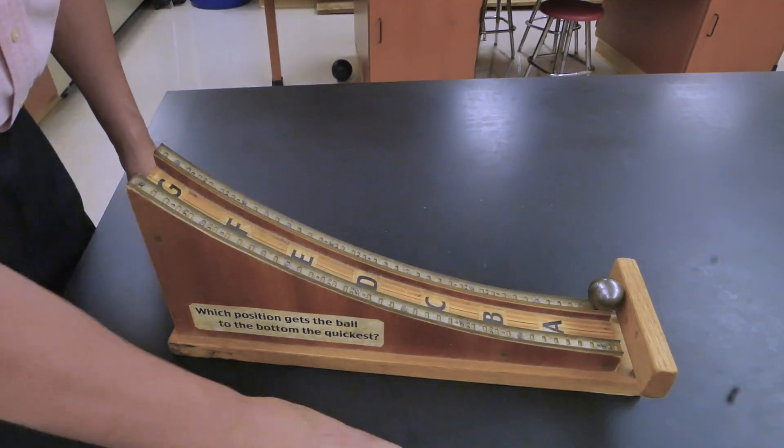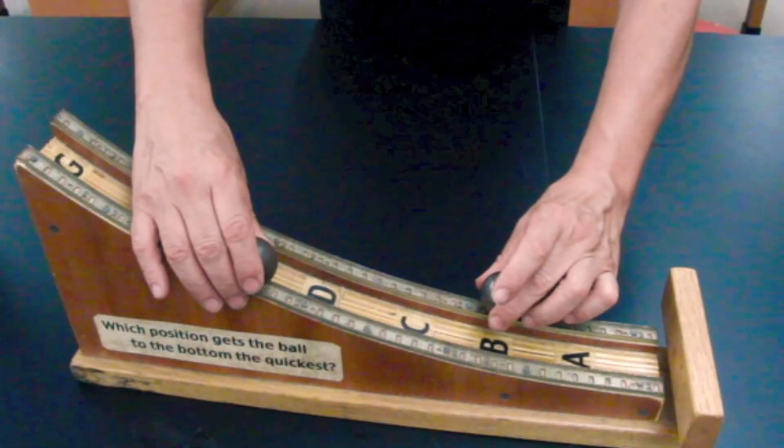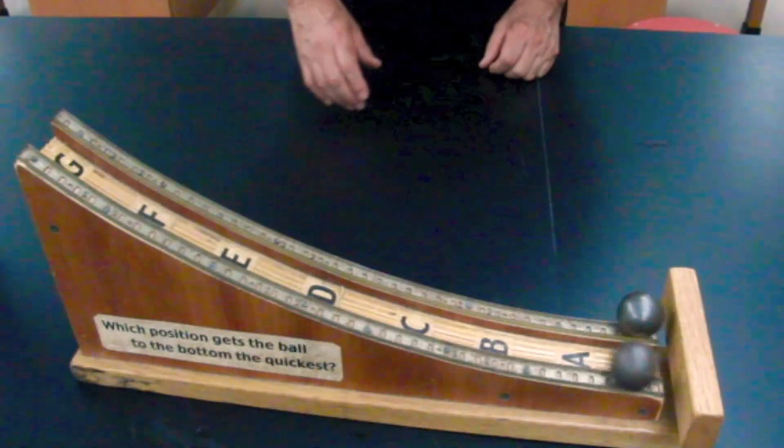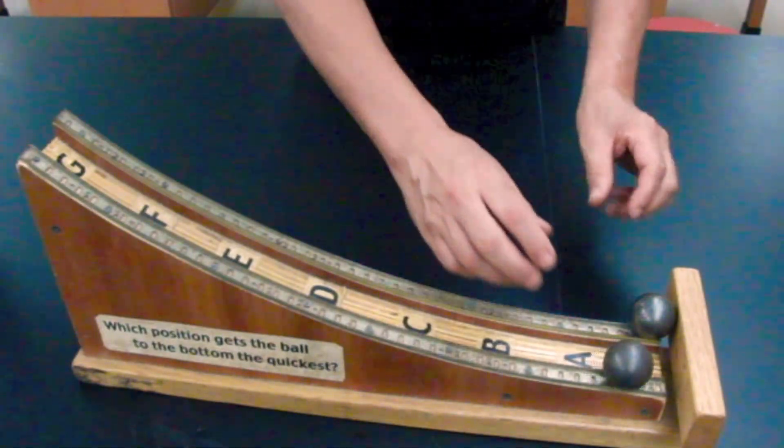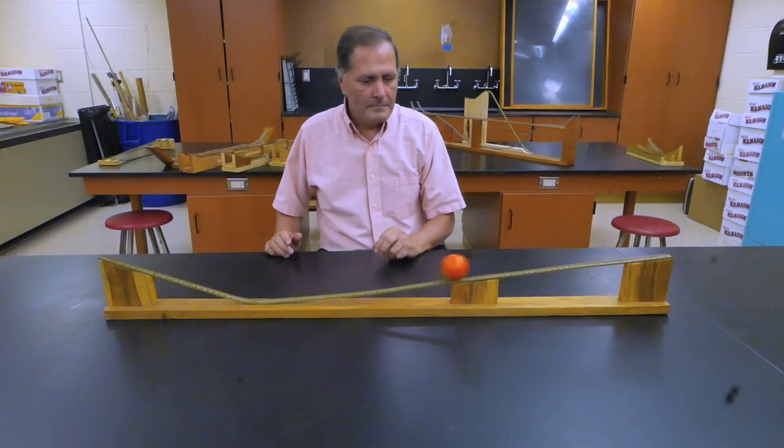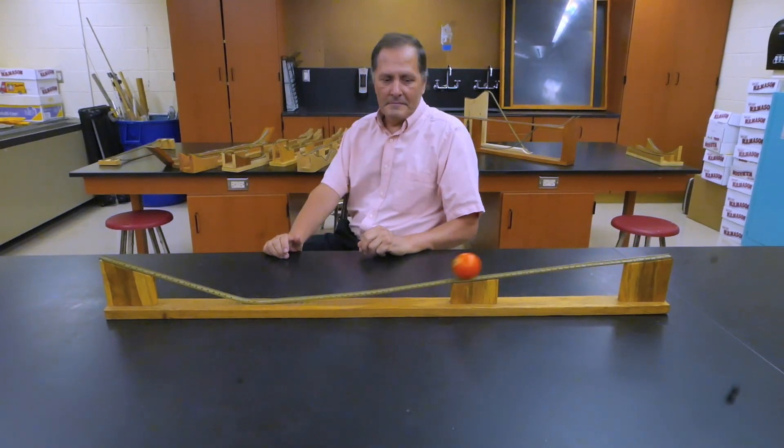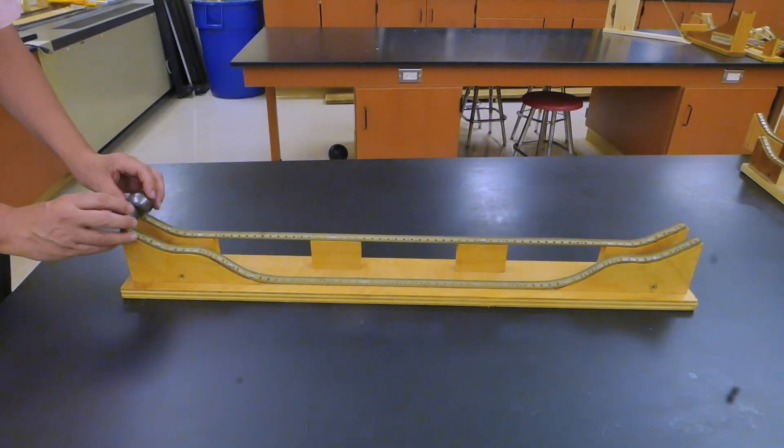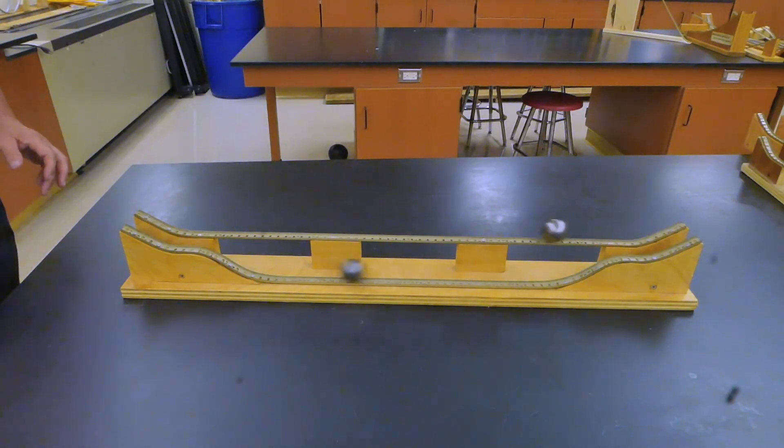This piece has two identical tracks. I can release the balls at any location and they'll still reach the bottom together. This track helped Galileo design the idea of inertia. There are several varieties of high-low tracks. Here's one of them.